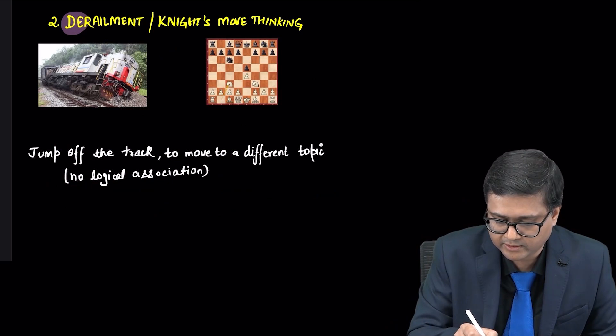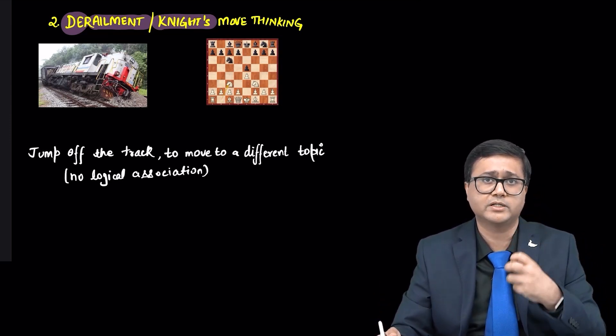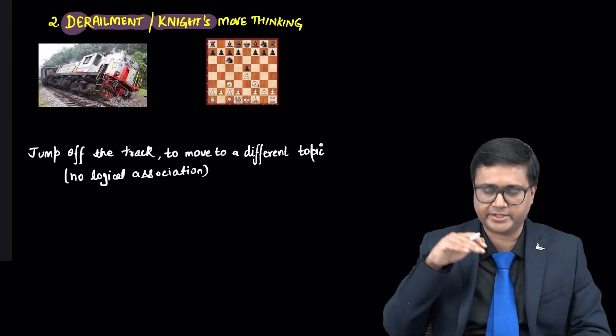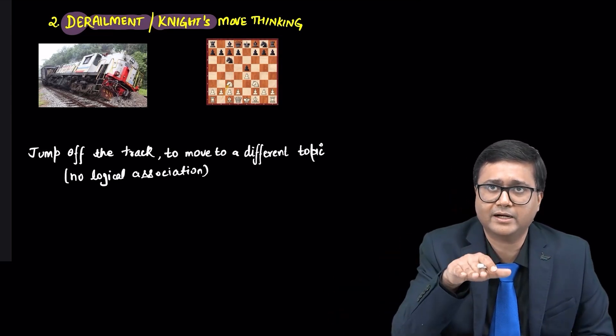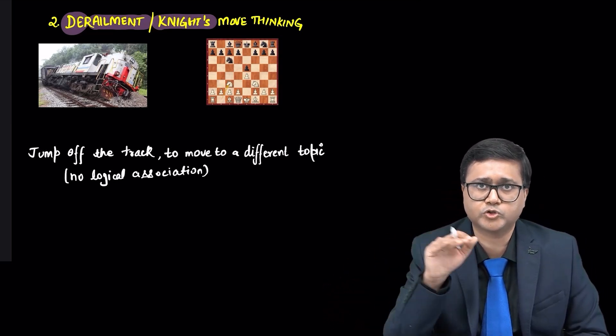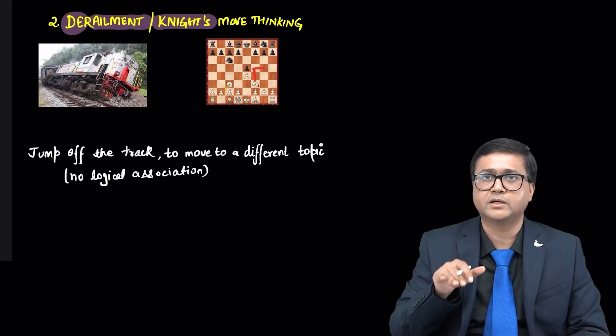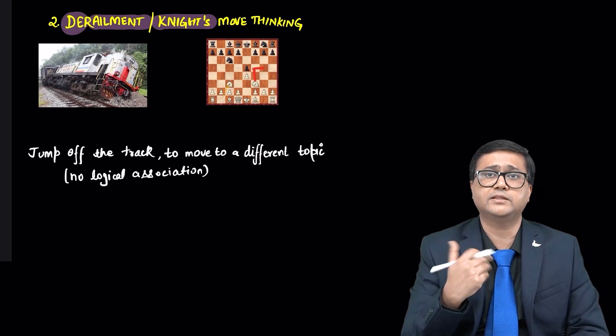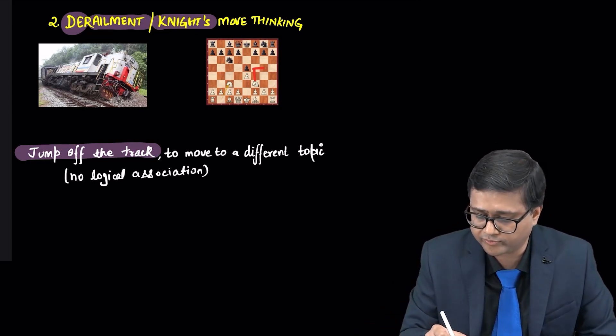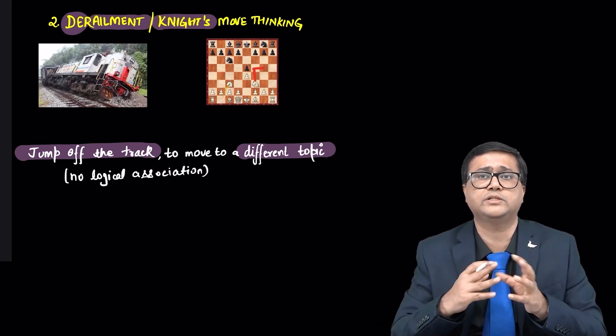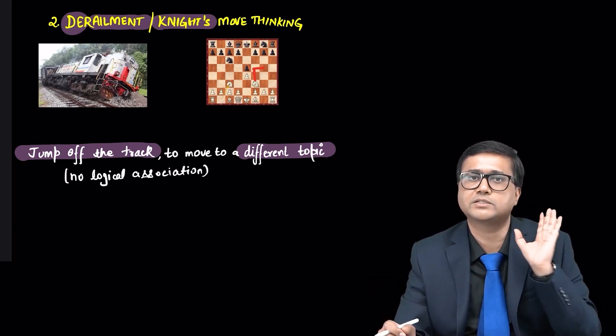Derailment, very interesting. Derailment, also known as knight's move thinking. Try to see the name. You will be able to understand the concept. What is derailment? A train, a rail was moving on track and it got derailed. This is derailment. That means the person who was on track, his thoughts were on track and suddenly got derailed. Or also known as knight's move thinking. How does a knight move on a chessboard? It goes straight and then takes a turn. Goes straight and then takes a sudden turn. This is what is happening in thinking. What happens here is the person jumps off the track to move to a different topic, and there is no logical association between these topics. You are talking to a person, he is on track and suddenly he gets derailed. If you just see the name, you will understand the concept.